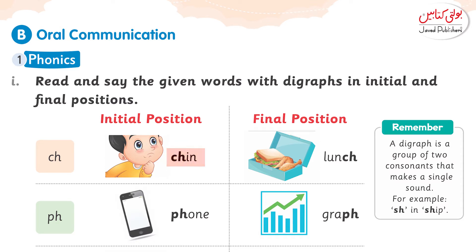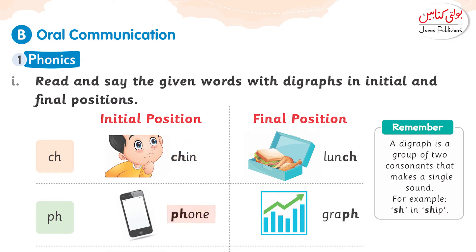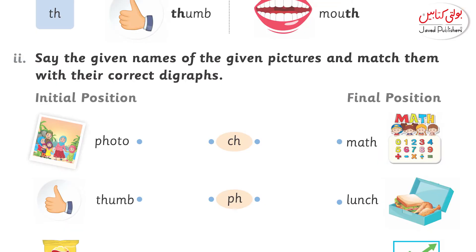From 'ch', the word is 'chin'. Main 'c' ki sound aur 'h' ki sound alag nahi bol rahi. Main is ko 'ch' ki sound de rahi hun — jaisi ke 'chin'. Ch, chin. Isi tarah 'ph' — phone. Or is jaisi activity aapko neeche di gayi hai.